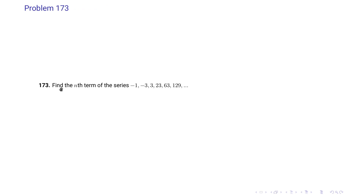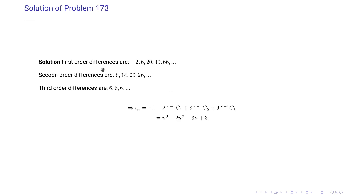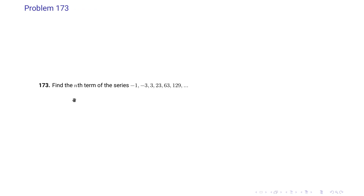Problem 173: Find the nth term of the series −1, −3, 3, 23, 63, 129. The first-order differences are −2, 6, 20, 40, 66; second-order differences are 8, 14, 20, 26; and third-order differences are constant at 6. Applying the finite difference formula, tn = t1 + Δt1 · C(n−1,1) + Δ²t1 · C(n−1,2) + Δ³t1 · C(n−1,3), gives the nth term as n³ − 2n² − 3n + 3.